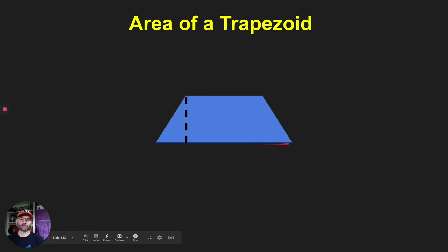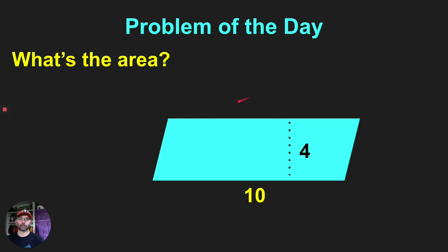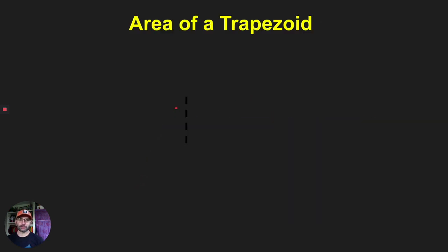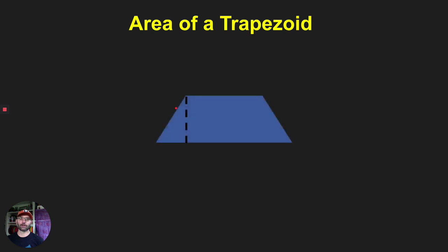A trapezoid has only two sides that are parallel. If you remember the parallelogram — in a parallelogram all sides are parallel — well in a trapezoid only two sides are parallel. You could also think of it as a triangle with the top cut off. But the main thing about a trapezoid: two parallel sides and two sides that are not parallel.